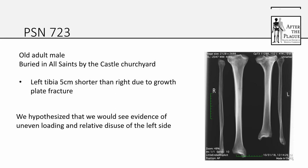Individual 723 is an old adult male buried at a parish cemetery called All Saints by the Castle, also called Comet Place. He had a left tibia that was five centimeters shorter than the right because he had sustained a growth plate fracture on the left side at some point during his adolescence, which resulted in the shortened limb. For this individual, we hypothesized we would see evidence of uneven loading, since he probably couldn't exert as much force through the left side. This would certainly have presented as an altered gait — a noticeable limp.